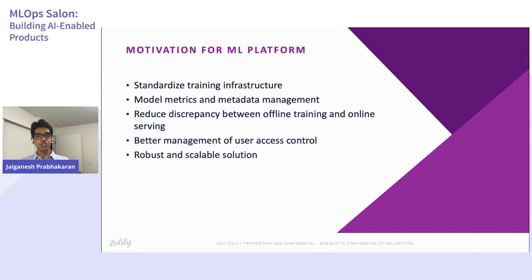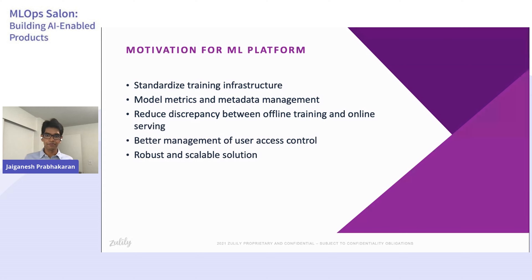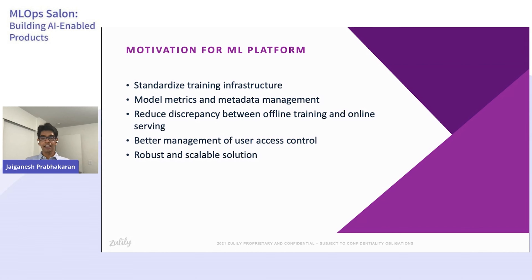We also wanted better management of user access control. Sometimes it is not necessary for us to provide all the data access uniformly across teams due to privacy and security requirements, and it can be really challenging if you don't have a standardized infrastructure. With the help of the ML platform, we wanted to enable user access control across our data and applications. And finally, last but not the least, we wanted a robust and scalable solution. It was very difficult to manage costs and the solution as we were growing as a team. A lot of compute resources were being wasted, there was no easy way to monitor, and we wanted a solution that would set us up as our teams and company grew.